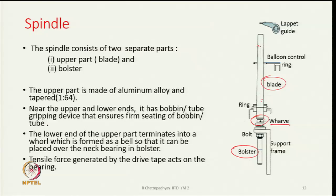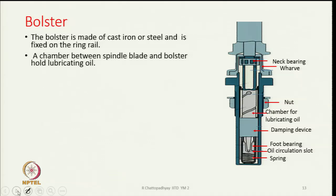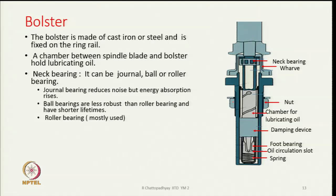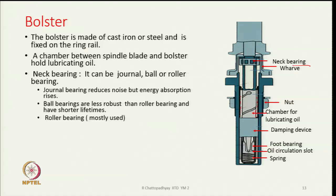The bolster is made of cast iron or steel, fixed on the ring rail. A chamber between the spindle blade and bolster holds lubricating oil. The neck bearing — which can be a journal, ball, or roller bearing — is located here; roller bearings are mostly used as they give stable running. Journal bearings reduce noise but increase energy absorption; ball bearings are less robust than roller bearings and have a shorter lifetime.